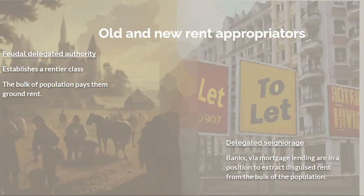With feudal delegated authority you established a rentier class and the bulk of the population paid them direct labour rent. With the current financial system you have a delegated system of seigniorage, and the banks — via mortgage lending, personal credit card lending, and lending to companies — put themselves in a position where they extract disguised rent from the bulk of the population. People may think they own a house, but if they have a mortgage, that mortgage payment is a disguised form of rent going to the banks.